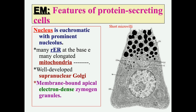Here the nucleus is an active euchromatic nucleus with a prominent nucleolus. We have basal rough ER, which is the cause of the basal basophilia. The mitochondria are very numerous and are characterized by being elongated, like those seen in the striated or intralobular duct. We have a well-developed supranuclear Golgi, and finally the secretory granules are electron-dense.